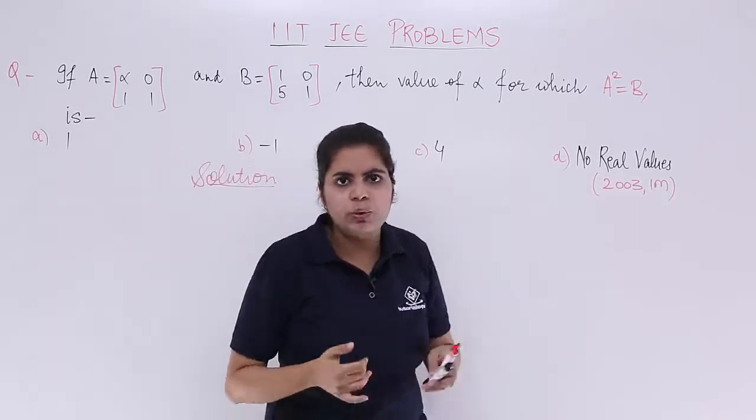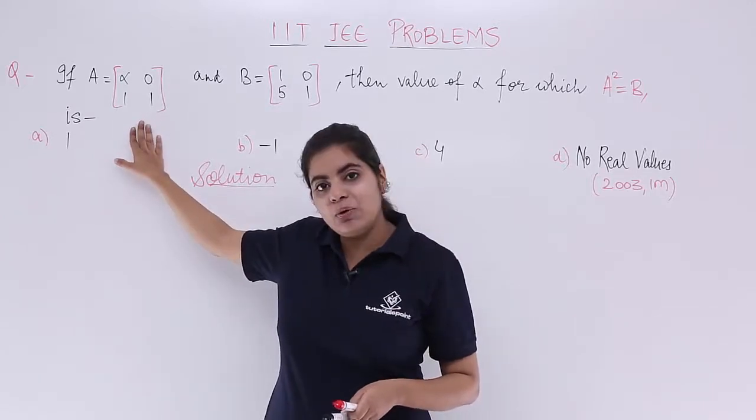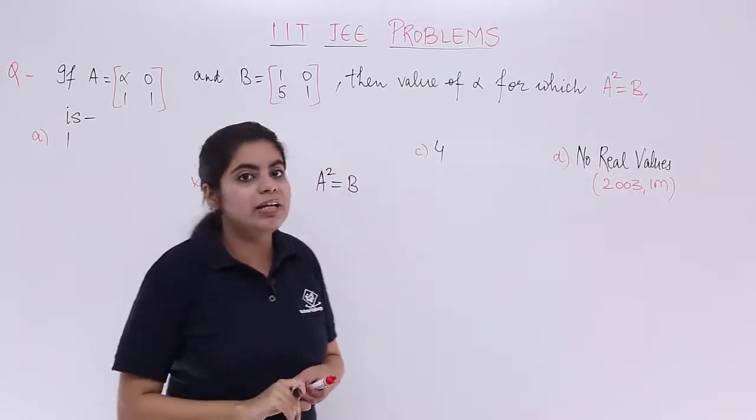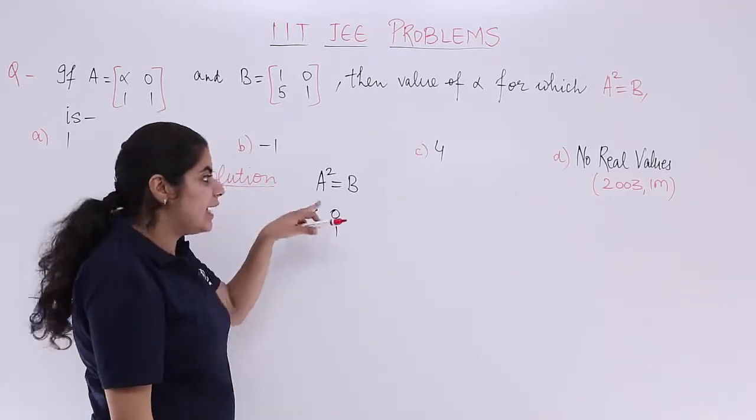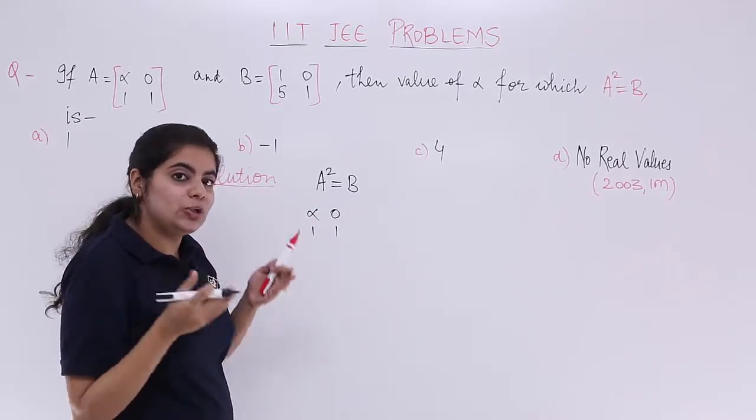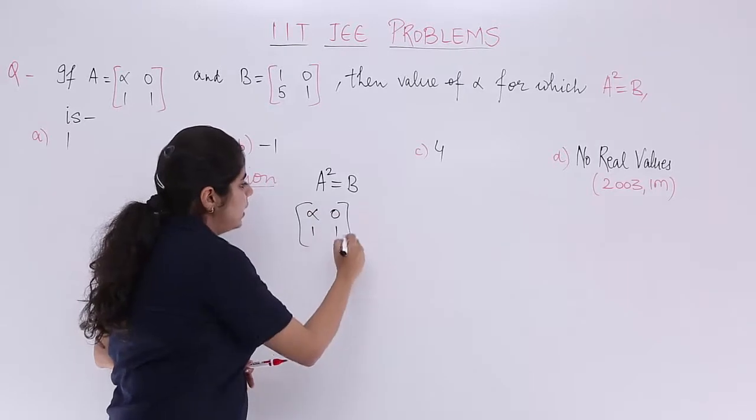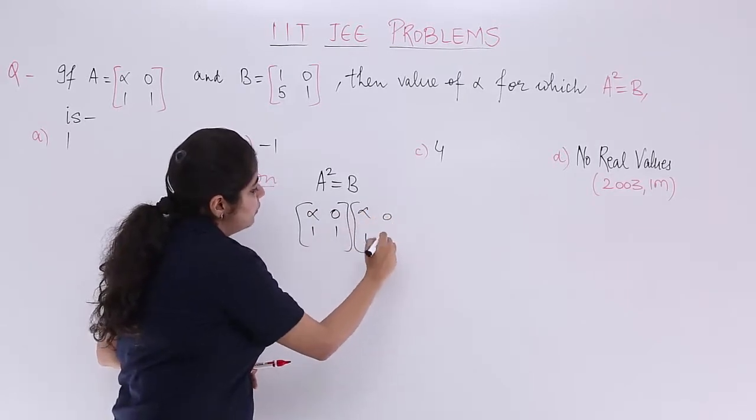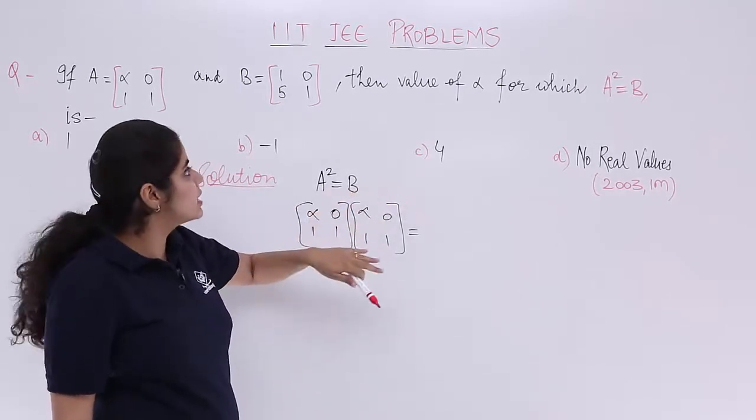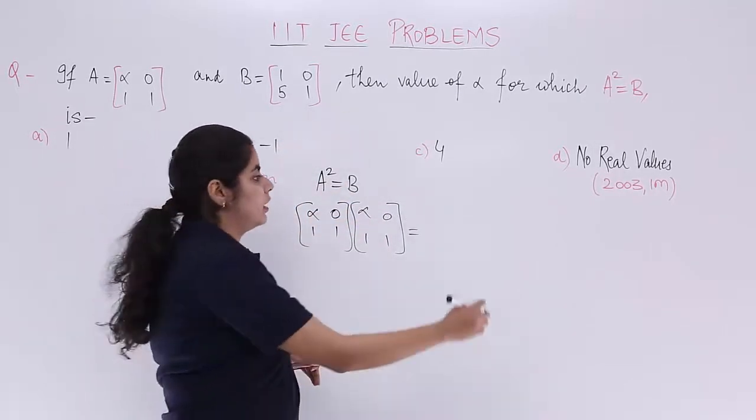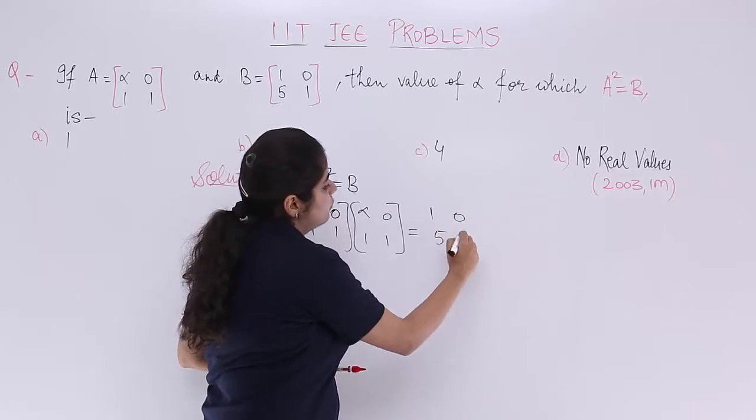Now what is A²? You have to find out. You already know the value of A: alpha 0, 1 1 is A. But A² means multiplying by A two times. So it is multiplication of alpha 0, 1 1 again and that whole thing is equal to the matrix B. What is matrix B? It is 1 0, 5 1.